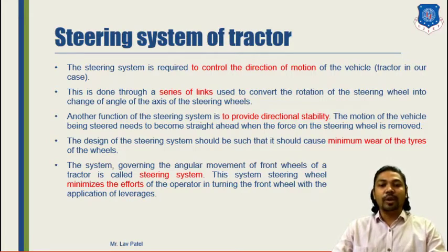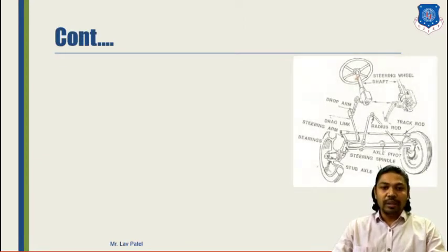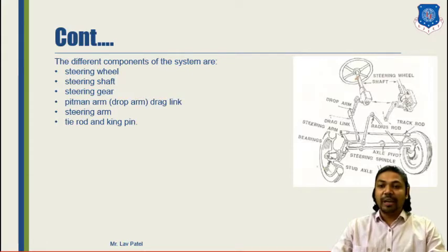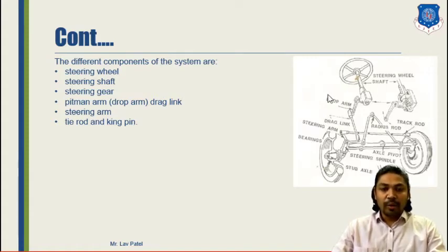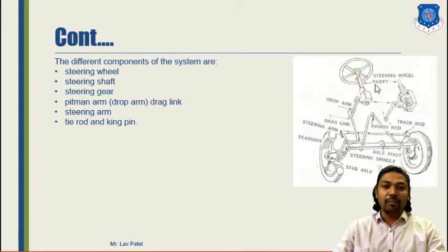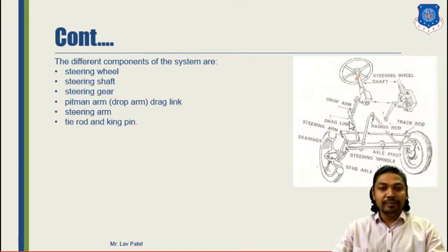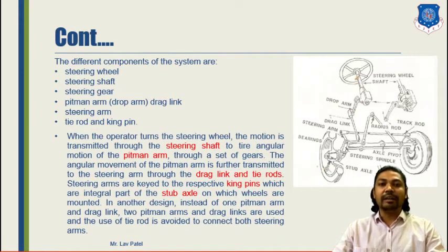The angular movement of the frontal wheels of the tractor is controlled by the steering system. By combining links and gears we can control our frontal wheels, and it is also used to minimize the effort of the driver or operator while taking a turn. The steering system has different components: steering wheel, steering shaft, steering gears, pitman arm or drop arm, drag link, steering arm rod, and kingpin.